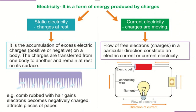Differentiating static electricity and current electricity: static electricity is charges at rest, whereas current electricity is charges moving. In static electricity, there is an accumulation of excess electrical charges — positive or negative — on a body; the charges are transferred from one body to another and remain at rest on its surface. For example, a comb rubbed with hair gains electrons, becomes negatively charged, and attracts a piece of paper. Current electricity means the flow of free electrons or charges in a particular direction constituting an electric current.